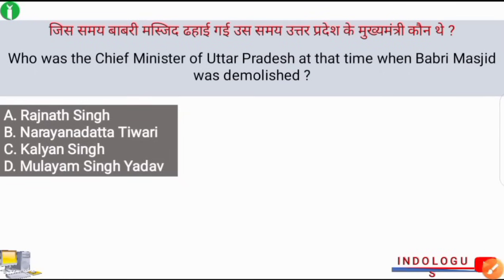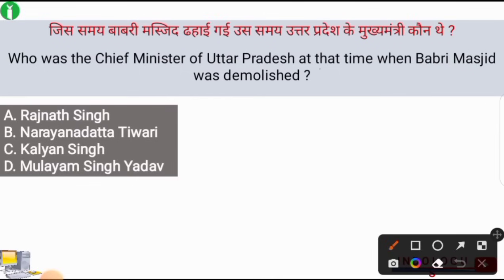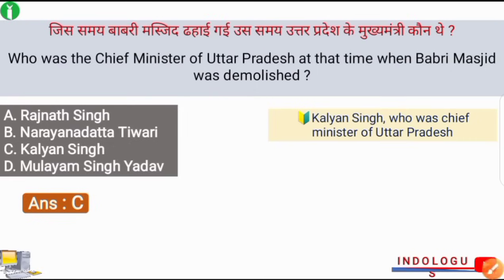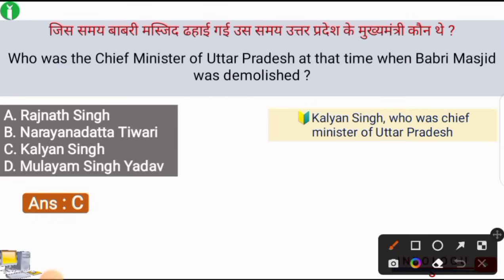Who was the Chief Minister of Uttar Pradesh at the time when Babri Masjid was demolished? The correct answer is option number C, i.e. Kalyan Singh. When the demolition of Babri Masjid happened in the year 1992, Kalyan Singh was the Chief Minister of Uttar Pradesh. You have to keep this in mind.